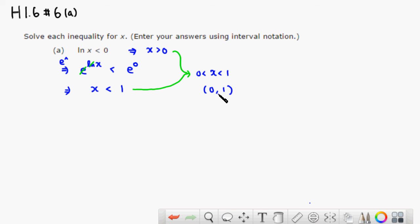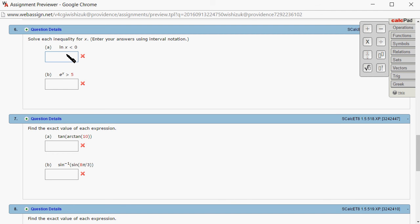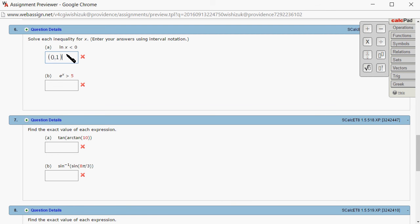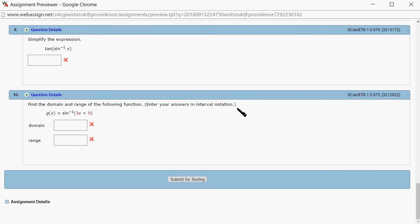So let's type it in. From 0 to 1. Let's check the answer. Submit for testing.